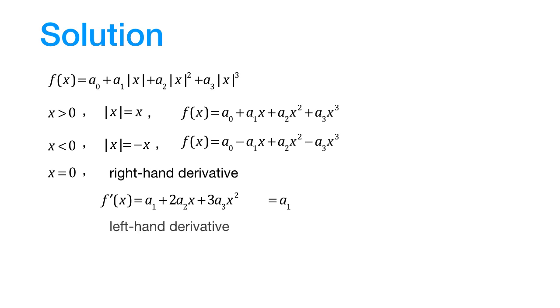Let us now find out the left-hand derivative. We differentiate the second line to get this. So, at x equal to 0, the left-hand derivative would be equal to minus a1.